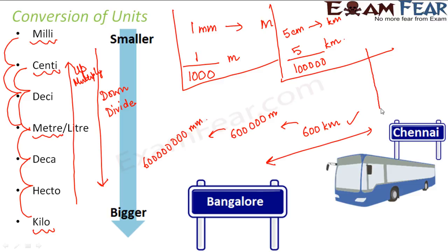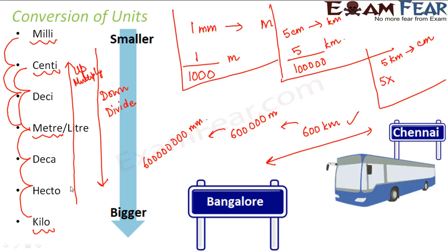Let's take the example of converting five kilometers into centimeters. Kilometer to centimeter is five steps up, so you multiply by one followed by five zeros — that is 100,000. So five kilometers is equal to five lakh centimeters. This is how the conversion of units happens.